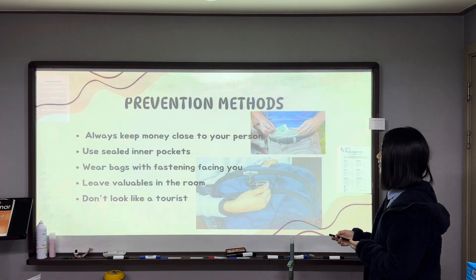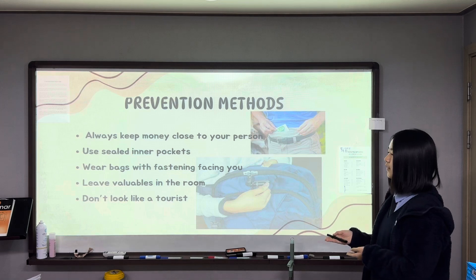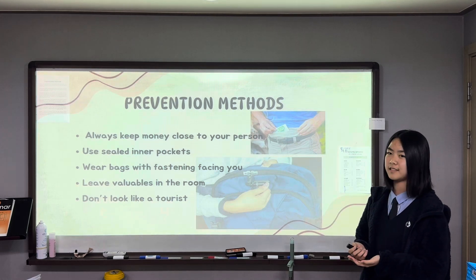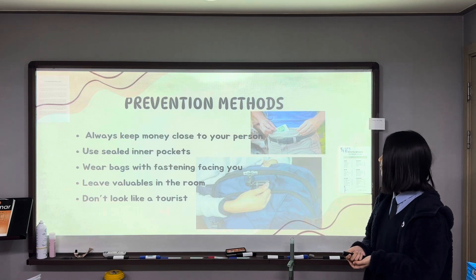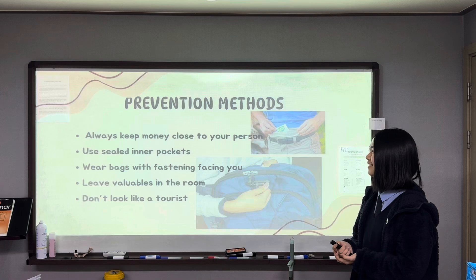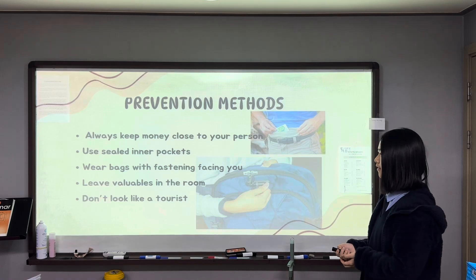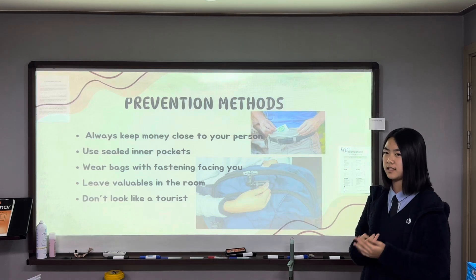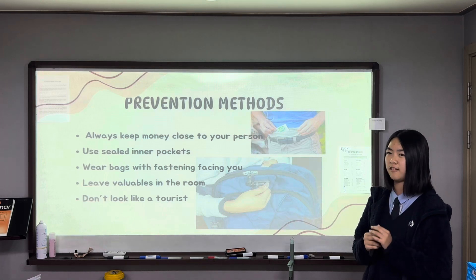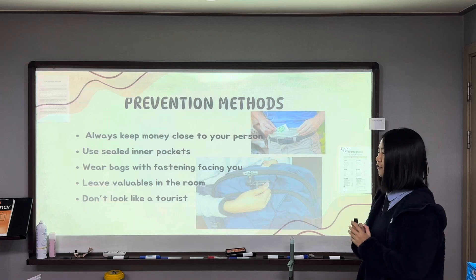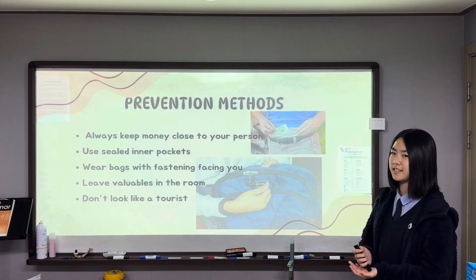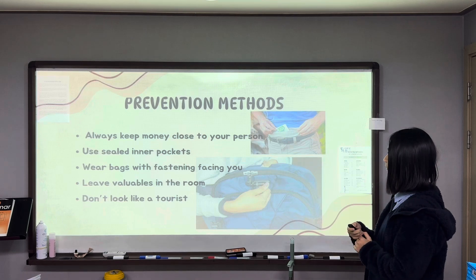And next, the prevention methods. First, always keep money close to your body. Second, use inner pockets. Third, wear bags with the fastening facing you. Fourth, leave valuables in the room and lock up the carrier. And fifth, don't look like a tourist, because pickpockets know that tourists carry more money, so you can easily become a victim.